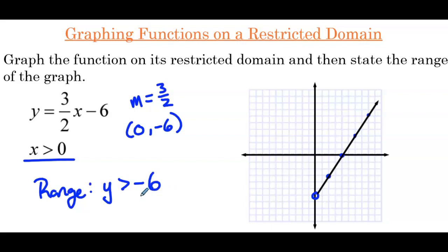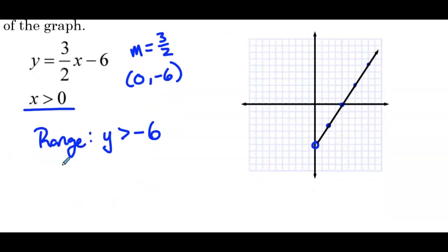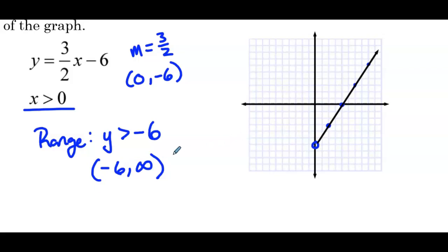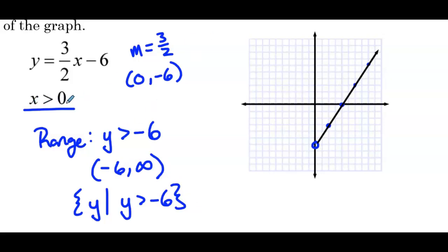We could also write this in interval notation: negative 6 to infinity, with parentheses on both sides since we're not equal to negative 6 and can't equal infinity. A third way is set-builder notation: curly bracket y such that y is greater than negative 6. Since the domain was given as an inequality, I would state the range as an inequality as well, but all of these are correct answers.